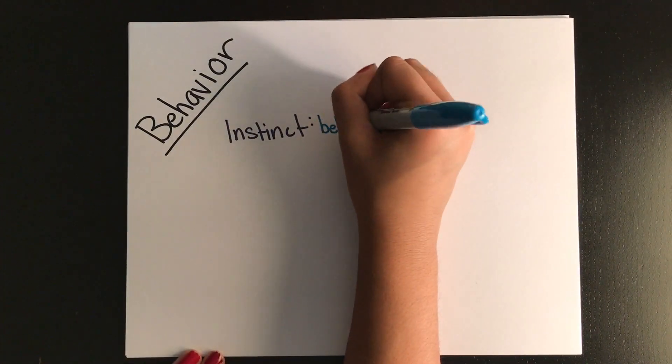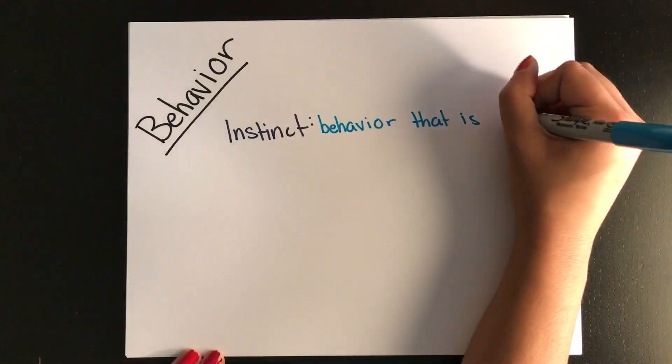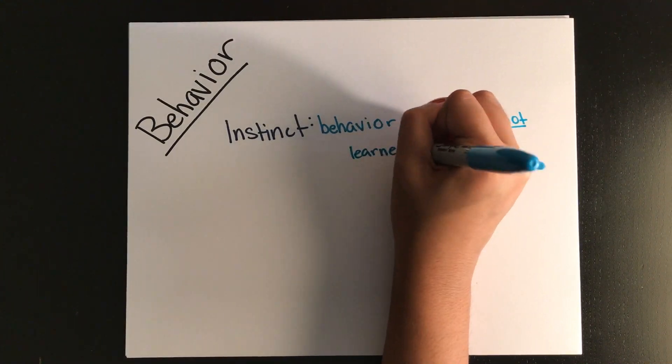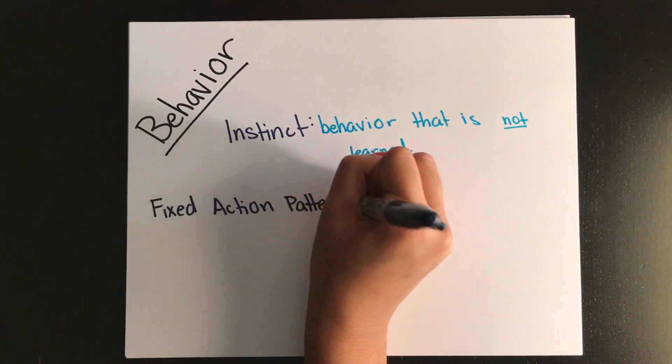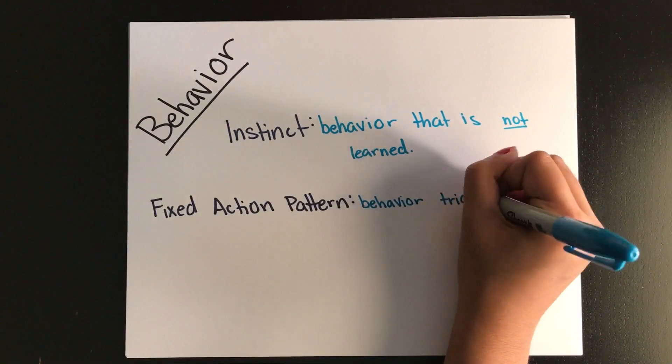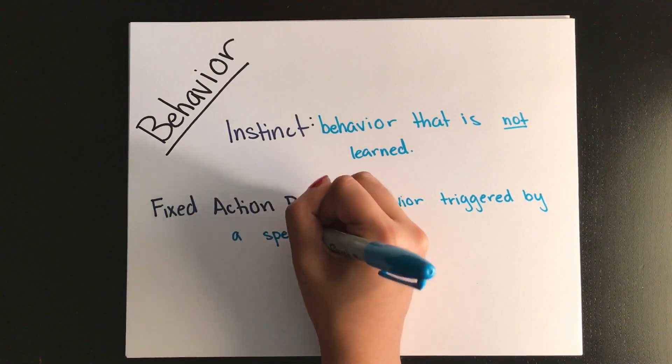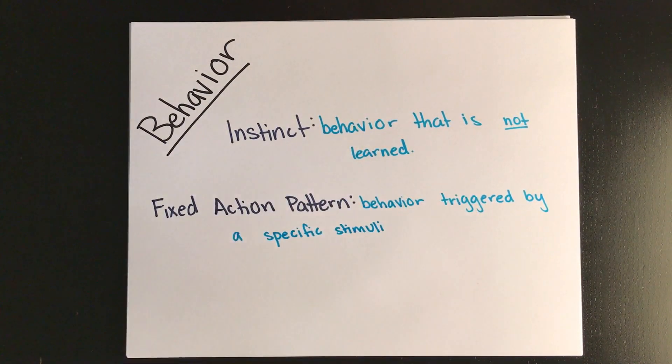For our purposes, we're going to describe an instinct as a behavior that is not learned. We're also going to describe a fixed action pattern as a stereotypical behavior that a specific stimuli will trigger for it to occur. An example of this would be a baby bird opening its mouth when its mom has food. That's just something it'll always do.